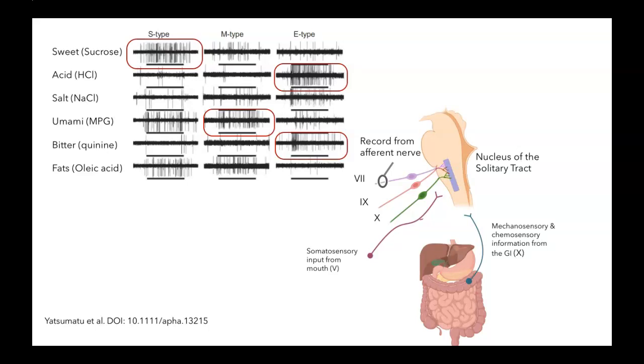Similarly, electrophysiological recordings from the second-order neurons, the ones whose cell bodies lie in the nucleus of the solitary tract, have shown that many of them are broadly tuned and respond to a lot of different kinds of tastants, whereas some are narrowly tuned. For example, there are some cells that respond only to bitter stimuli.